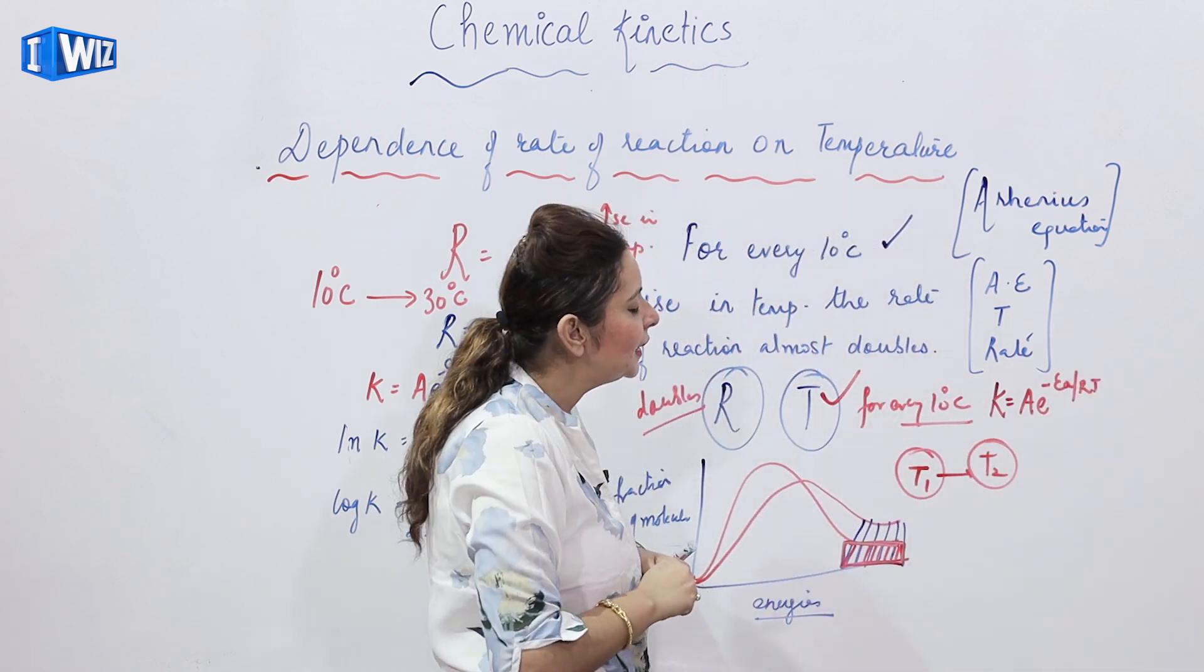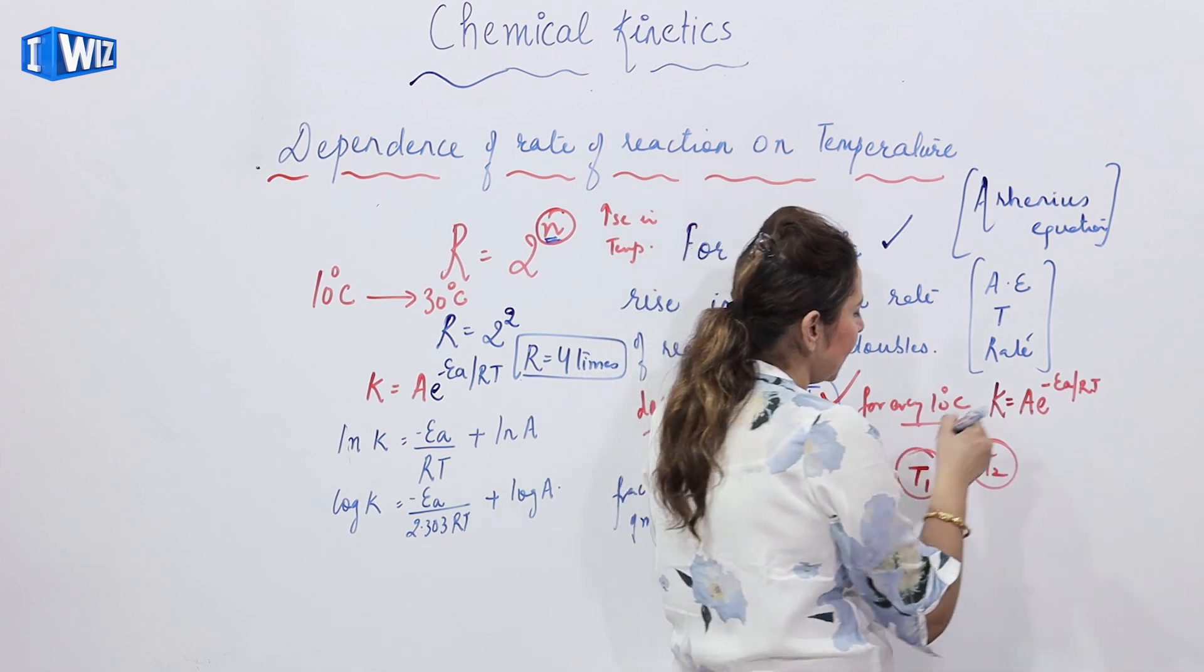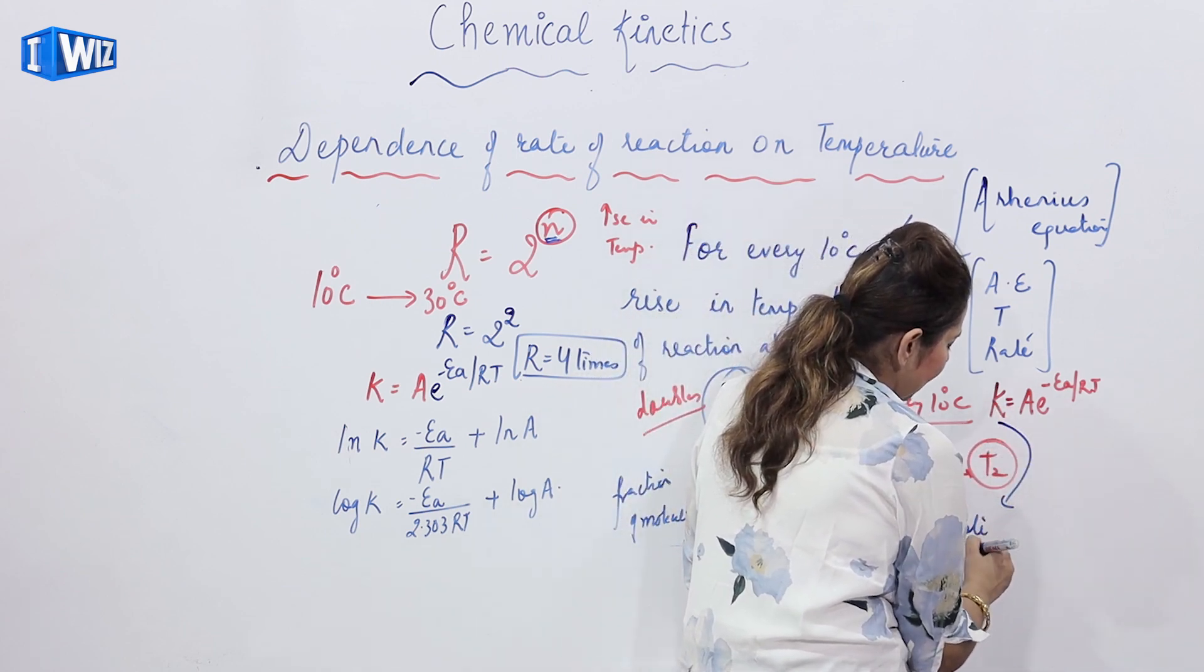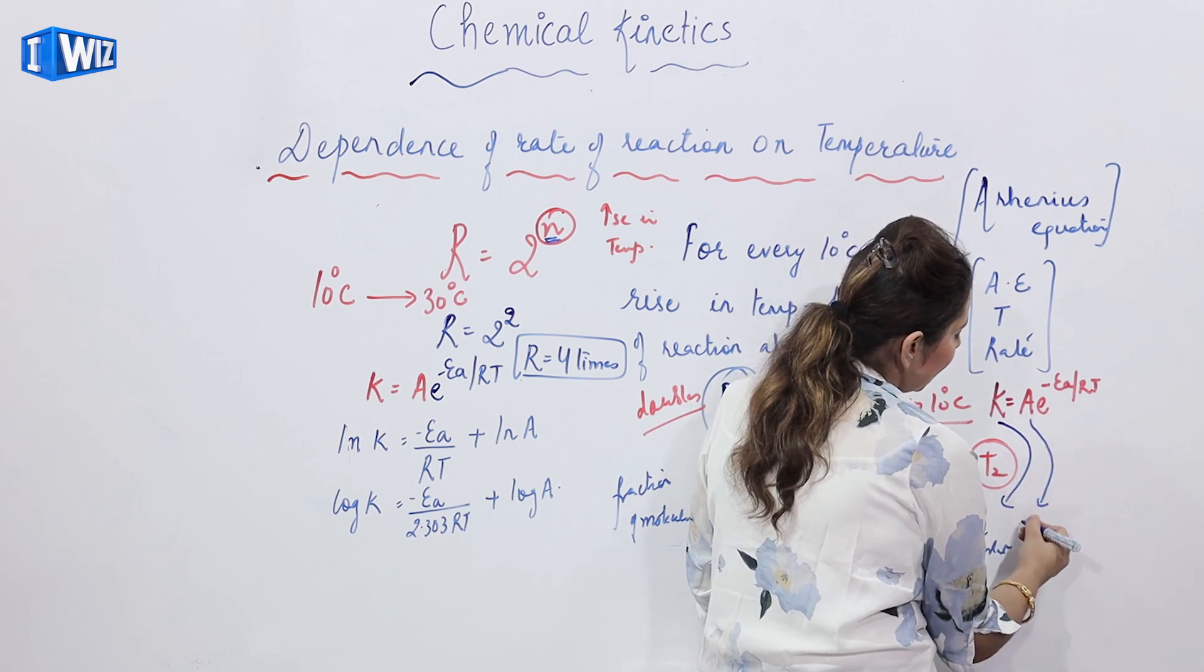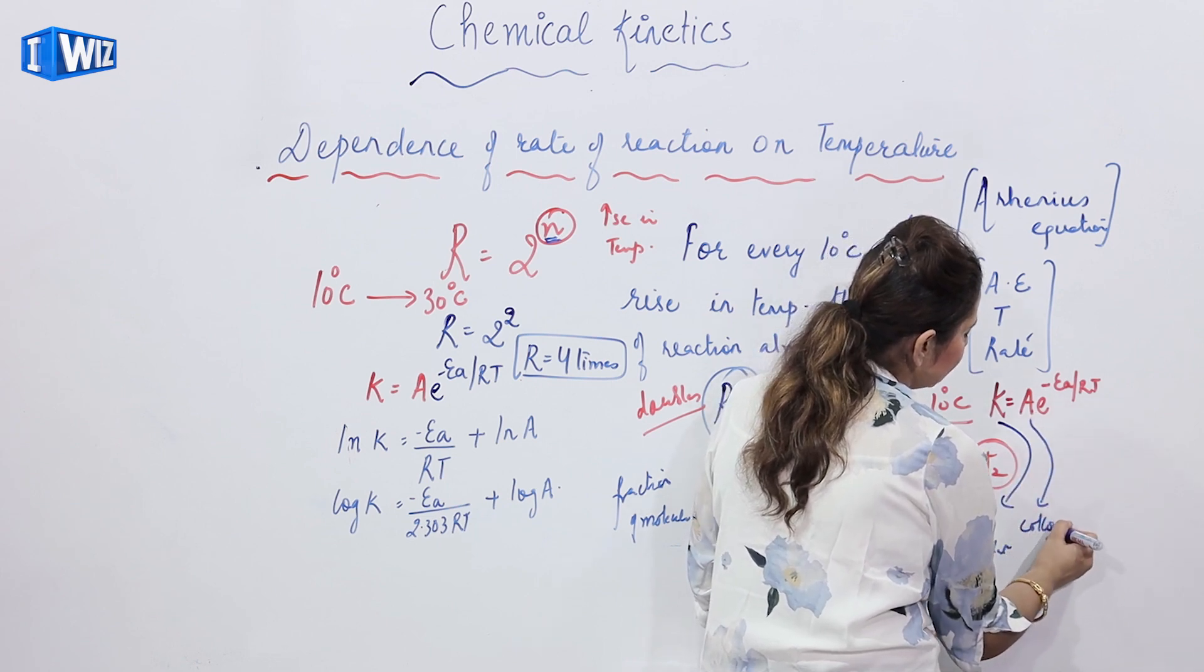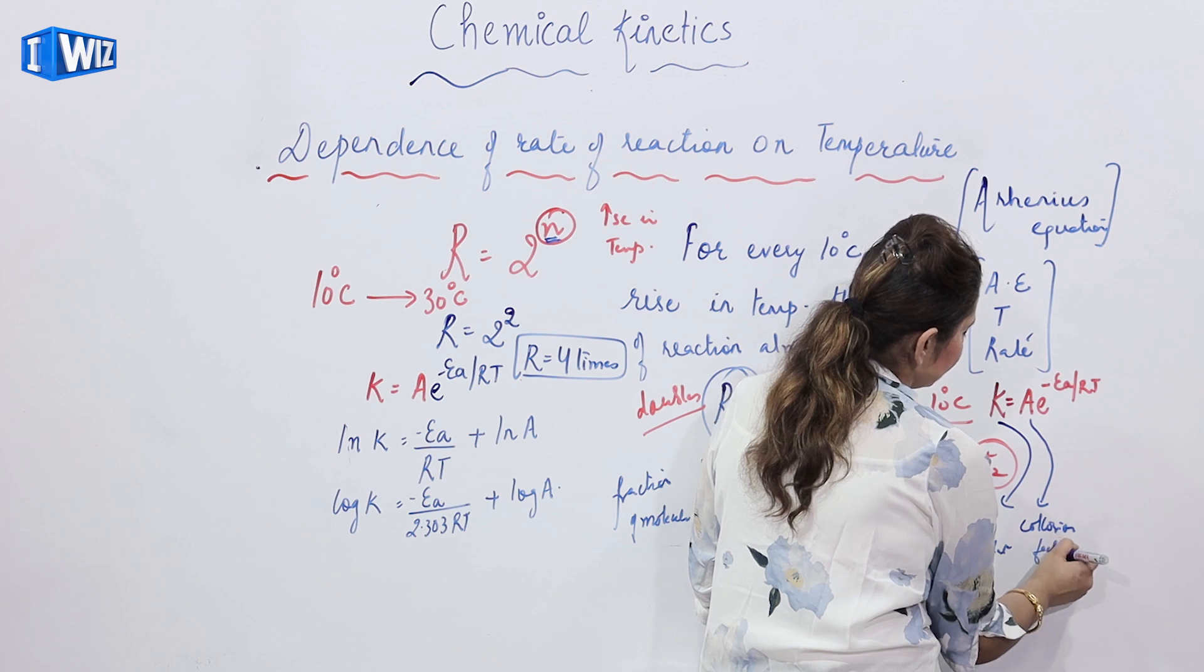What are these variables which are used in this equation? K you know is a rate constant. A we know is the collision factor.